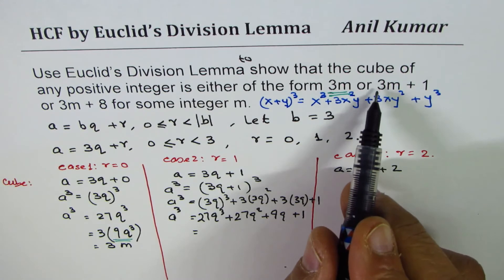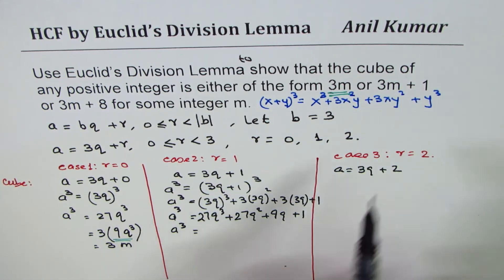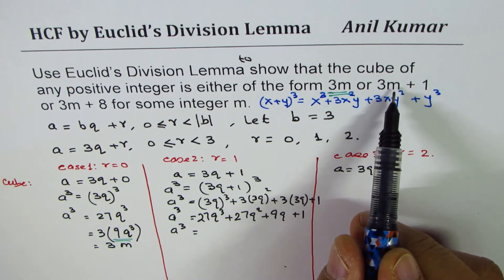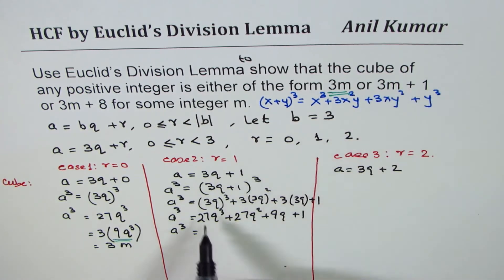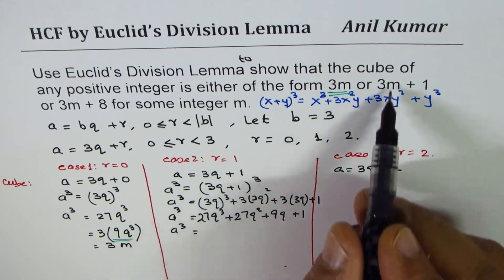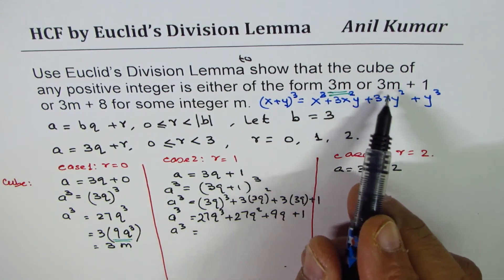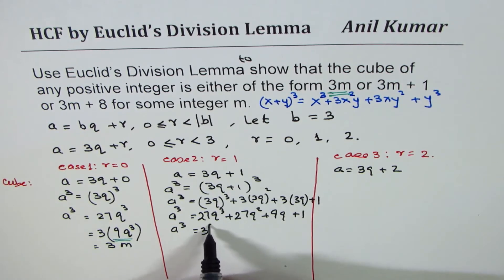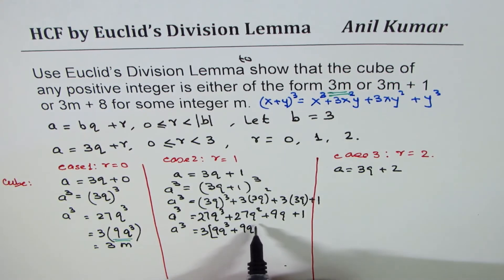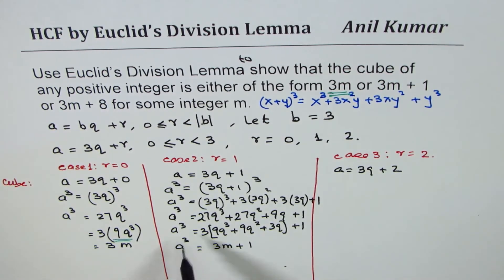And now since we want to show 3M plus 1, this question we could have placed 9M also. 9M plus 1, okay? But because we're given 3M, I'm taking 3 common here. What are you left with? 9Q cube plus 9Q square plus 3Q plus 1, and I could write this as 3M plus 1.